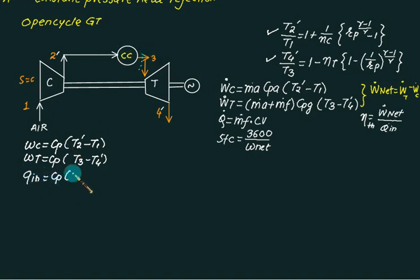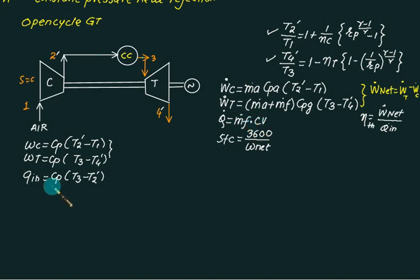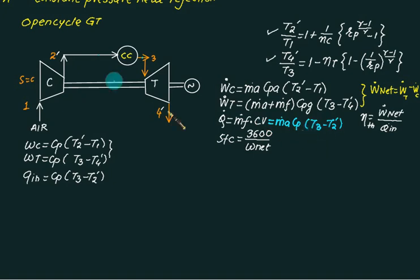Heat input on a specific basis is Q_in equals cp × (T3 - T2-dash), and thermal efficiency is W-net divided by Q_in. If the mass flow rate of fuel and calorific value CV are not given, you cannot use the fuel-based heat formula; instead use the alternate formula Q_in equals m-dot-air × cp × (T3 - T2-dash) for the heat balance and air-fuel ratio calculations.